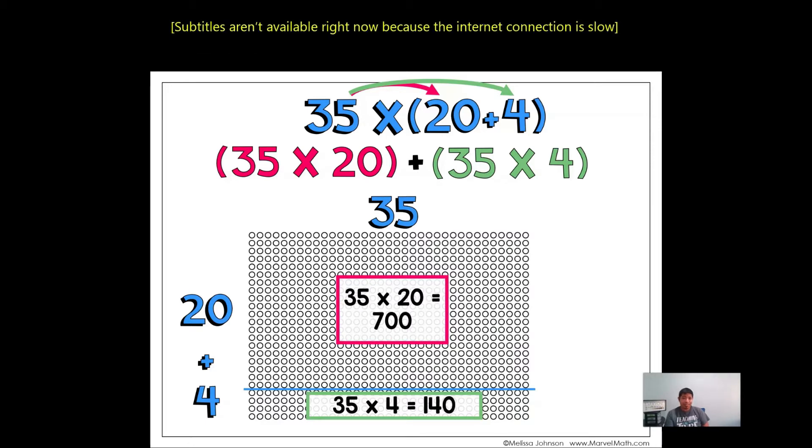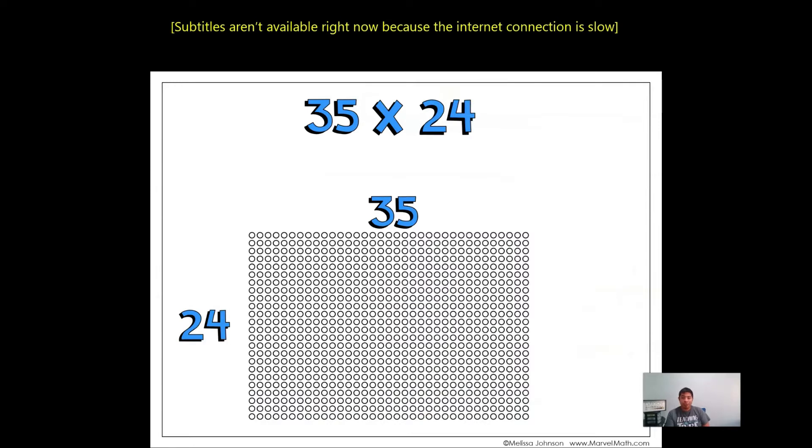We take the numbers, 700 and 140, and we just add them. And our answer is 840. So that's what the distributive property looks like. Let's go ahead and do another one. Or I'm sorry, another way we can do this is break the first one apart.